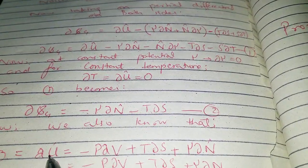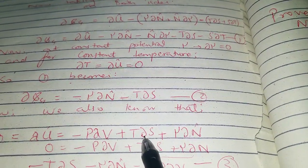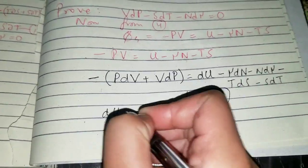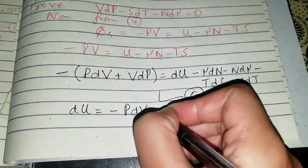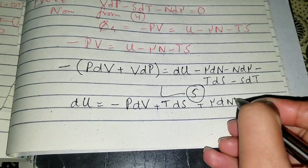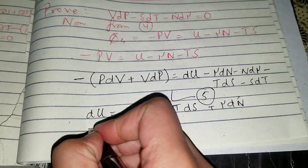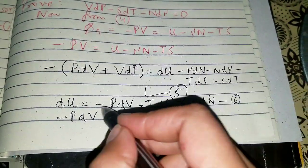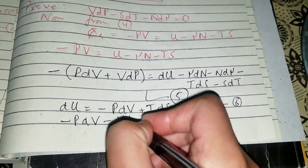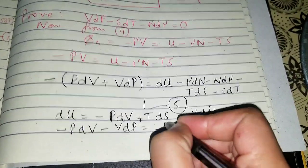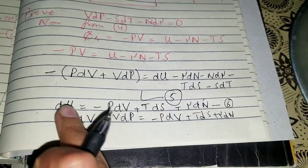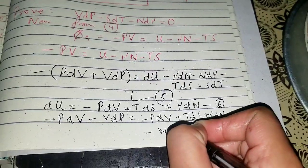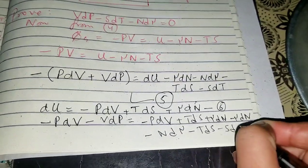Taking the differential of -pV using the product rule: -p dV - V dp equals dU minus μ dN minus N dμ minus T dS minus S dT. We then substitute the thermodynamic relation dU = -p dV + T dS + μ dN into this expression.